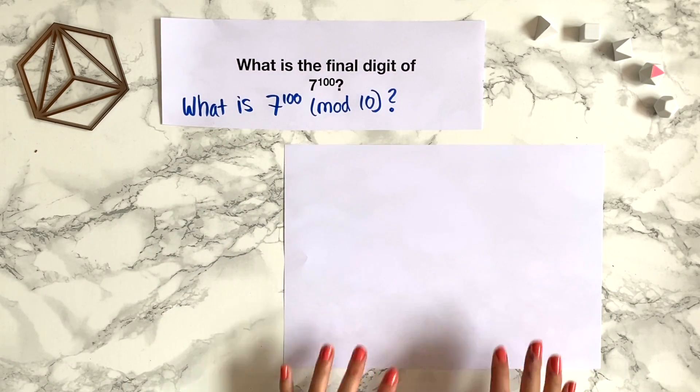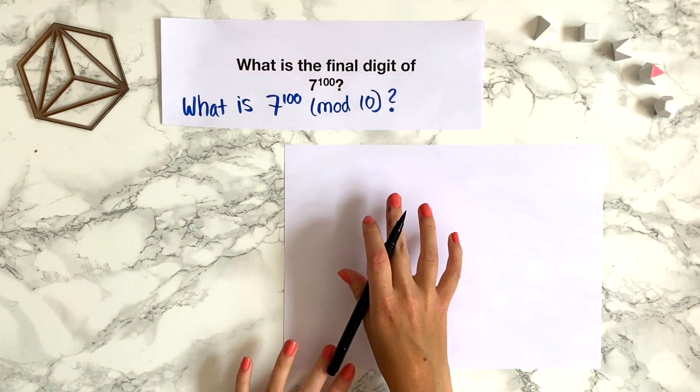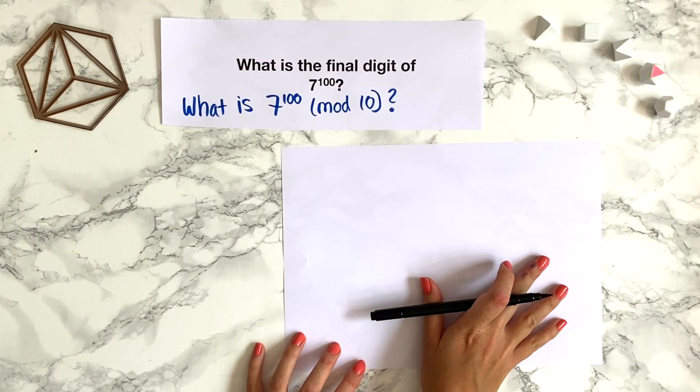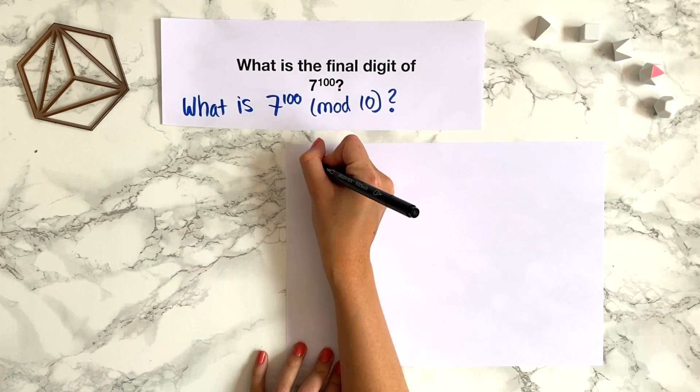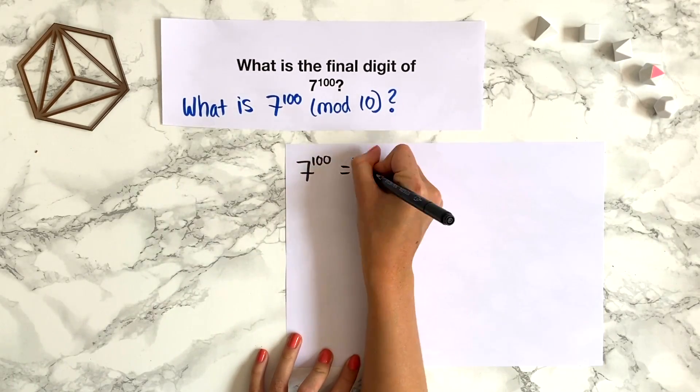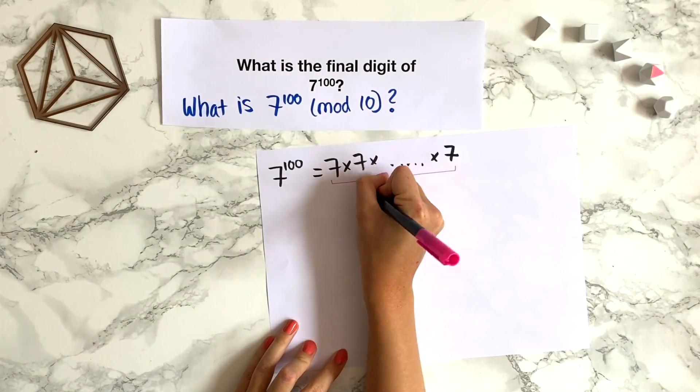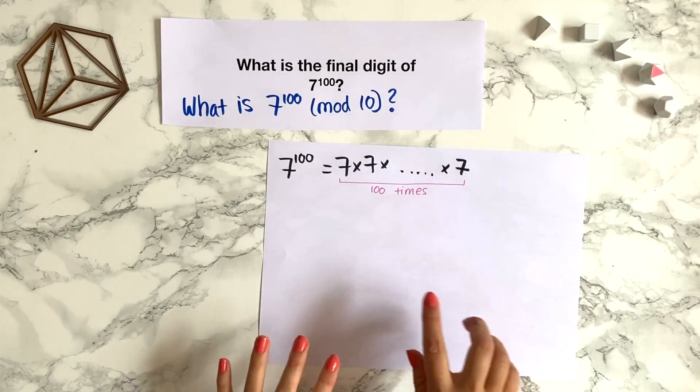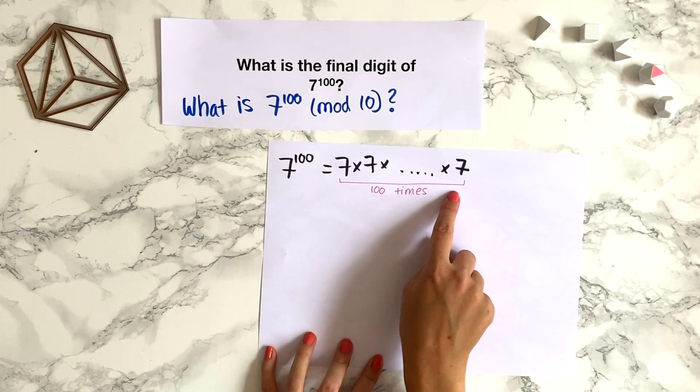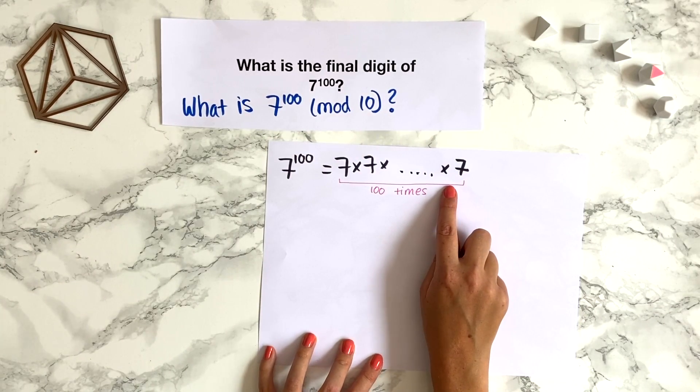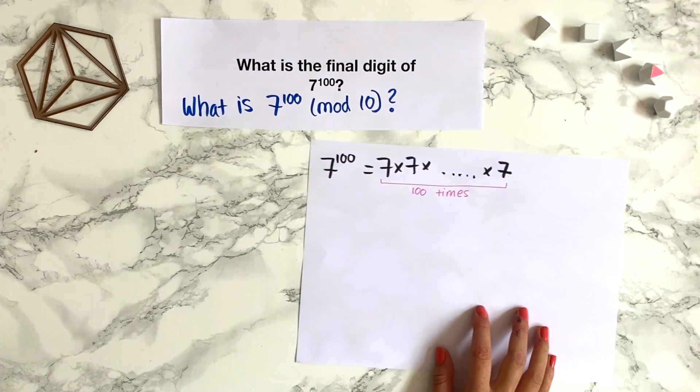Now let's have a think about how we can solve this question. So a really good first step when you have big powers and you're doing a modular arithmetic question is to remember that 7 to the power of 100 is actually just 7 times 7 times 7, 100 times. So now we're trying to evaluate this big product modulo 10.